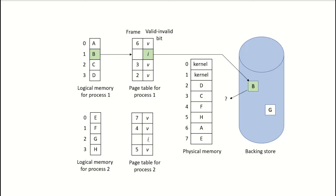Let's assume this is the logical memory for process 1 and this is the logical memory for process 2. This is the page table for process 1. We can see that currently in frame 6 we have virtual page 0 — logical page 0 is in frame number 6 and the valid-invalid bit is V, meaning it is a valid page. In the physical memory at frame 6, we have logical page 0 which had the contents A.